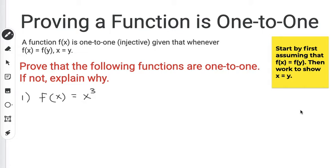Today, we're going to be proving that a function is one to one. A function f(x) is one to one, or injective, given that whenever f(x) equals f(y), then we also have x equals y.